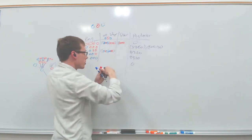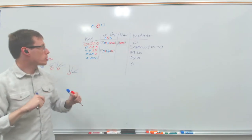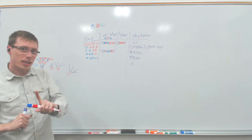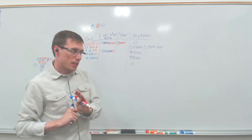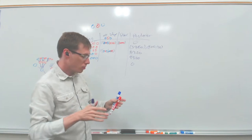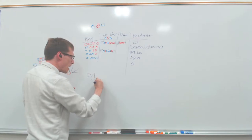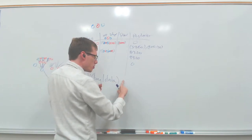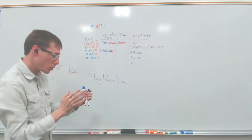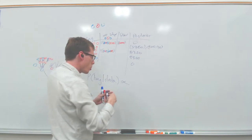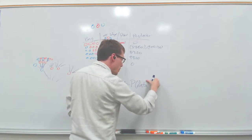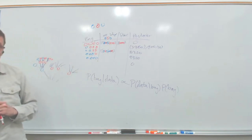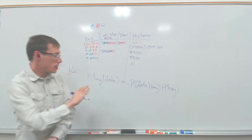The prior — written over here — is the probability of, say, four reds before we saw any data, which in this case is one out of five. When we multiply the likelihood and prior together, we get something proportional to the probability of a given bag given our observations. It's not exactly equal — we still have to normalize — so it's proportional to the probability of the data given the bag, times the probability of the bag.